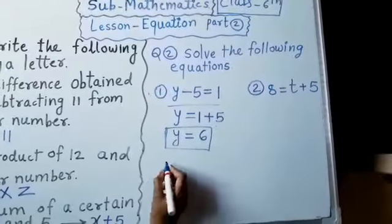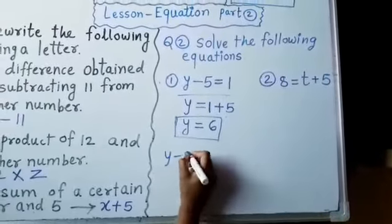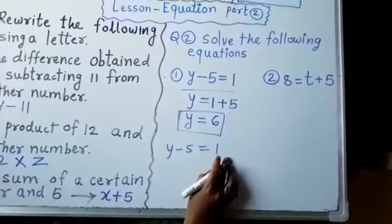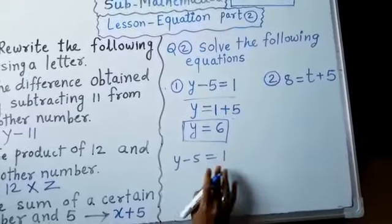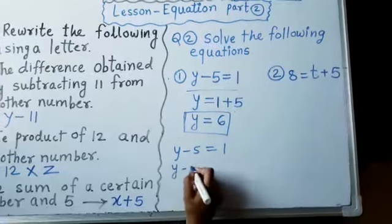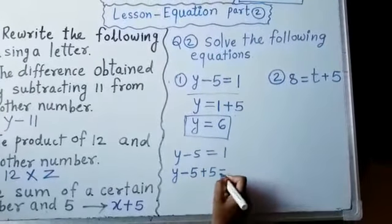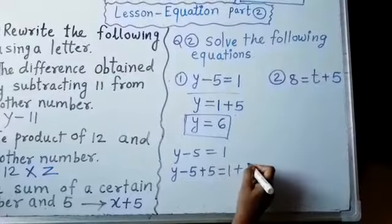And, method 2. y minus 5 is equal to 1. If we add 5 to both the sides of equation, then, we will get y minus 5 plus 5 is equal to 1 plus 5.